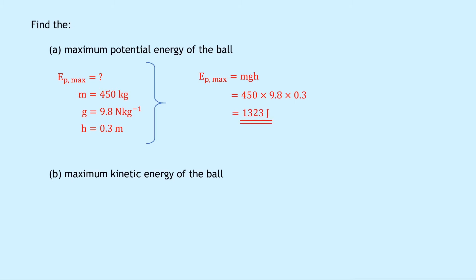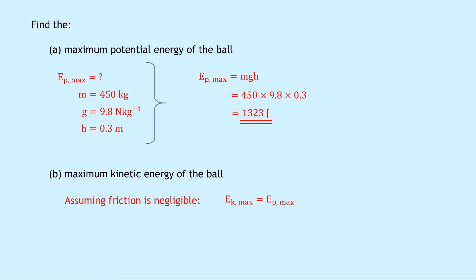Part B says to find the maximum kinetic energy of the ball. Assuming friction is negligible and there are no energy losses, the maximum kinetic energy equals the maximum potential energy, as the energy is simply converted from one form to the other. We've just worked out the maximum potential energy, so the maximum kinetic energy is simply equal to 1,323 joules.